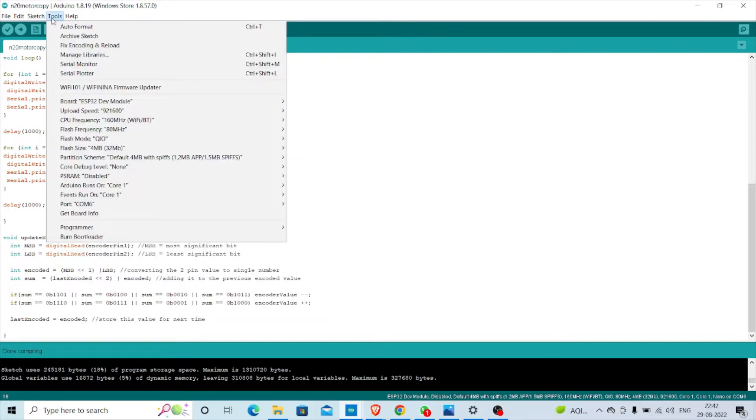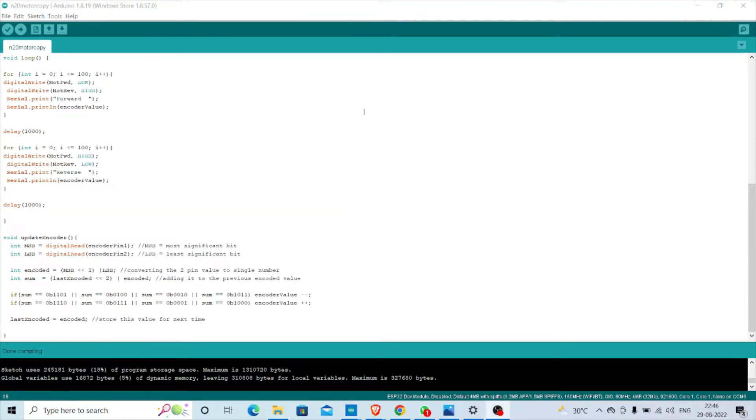After done with compilation, you have to check tools. You should select ESP32 dev module. You also check the proper COM port. In my case, both are already set.